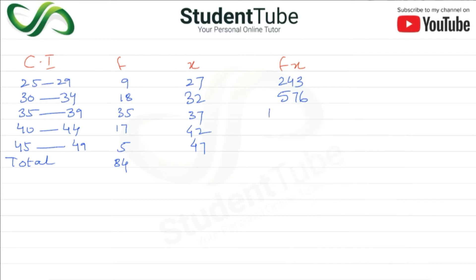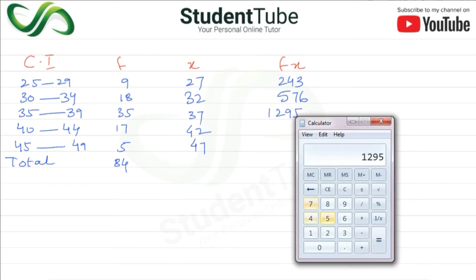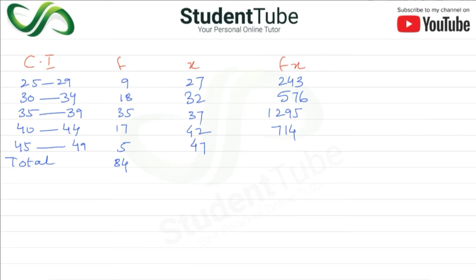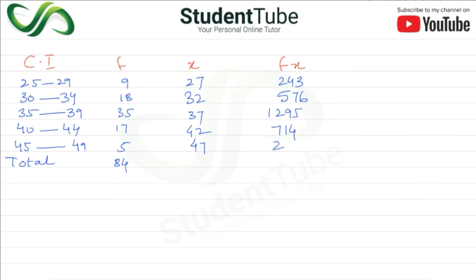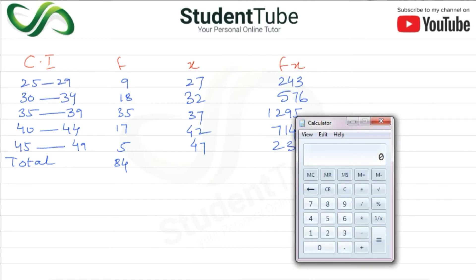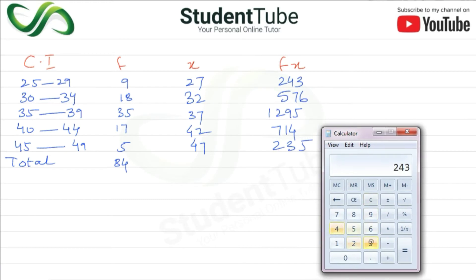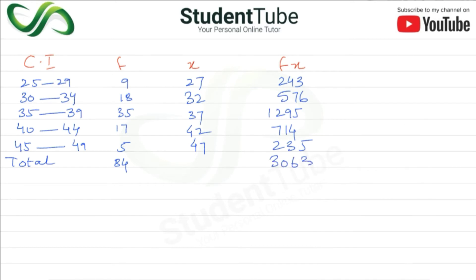Then 35 × 37 = 1295. Then 17 × 42 = 714. And the last one: 5 × 47 = 235. Now before applying the formula, we find total Σfx: 243 + 576 + 1295 + 714 + 235 = 3063.